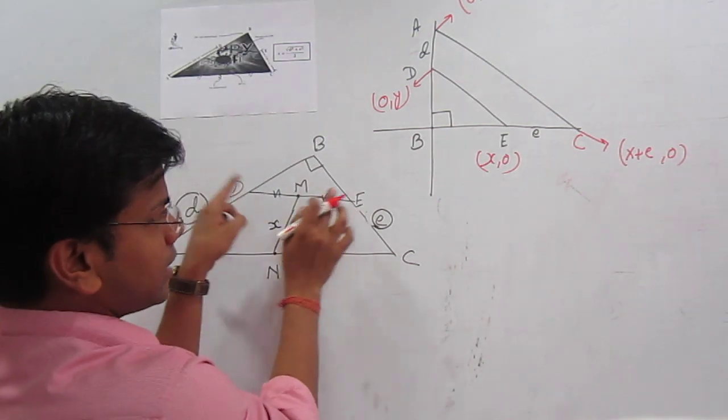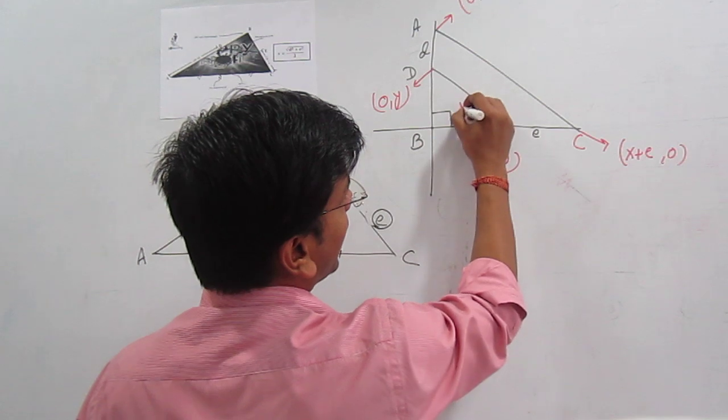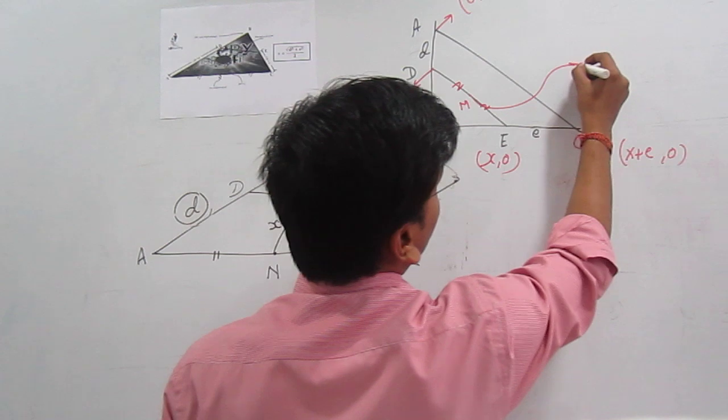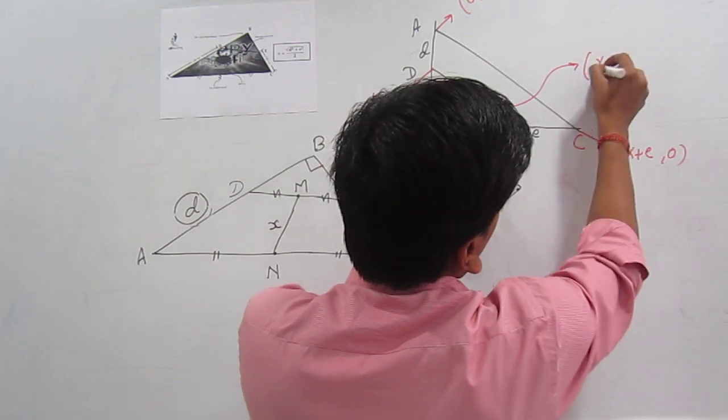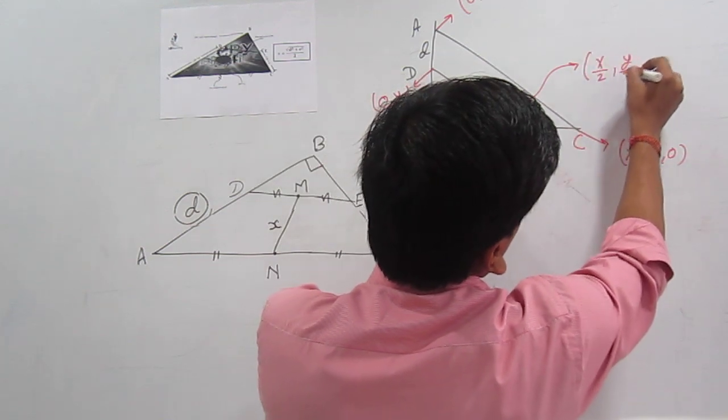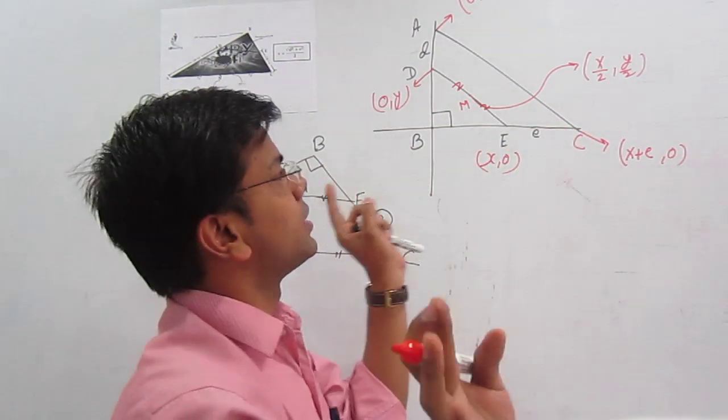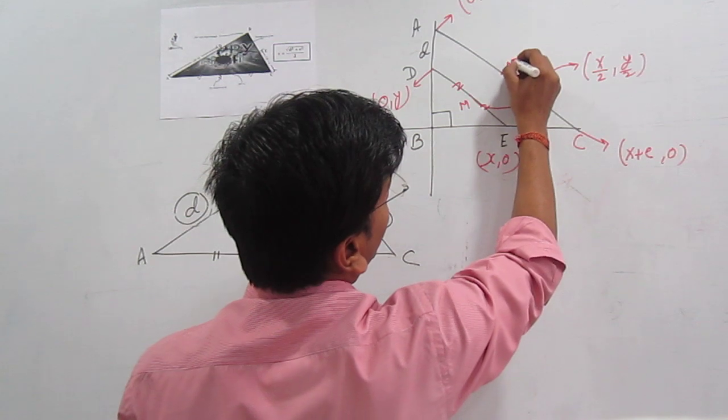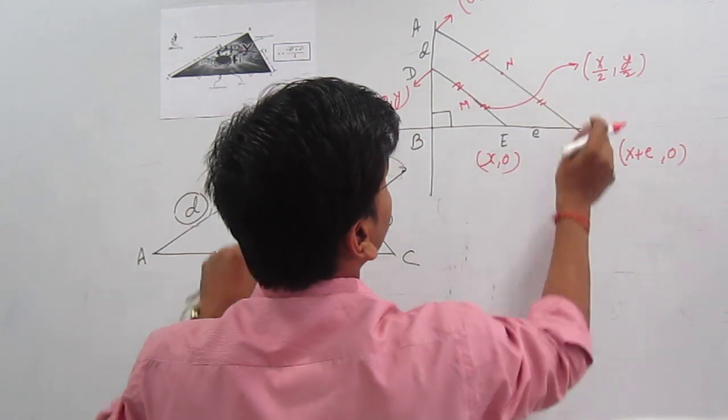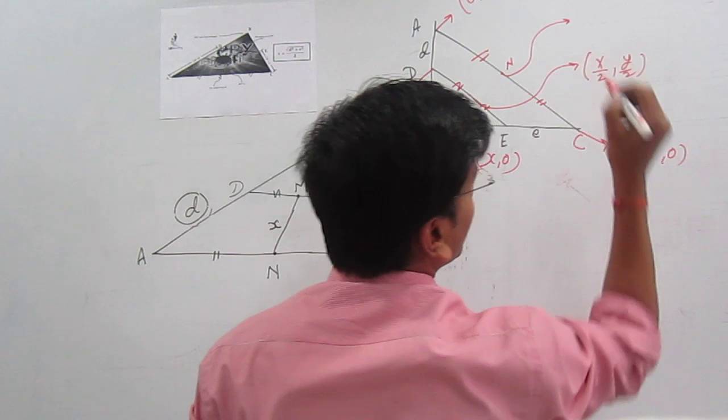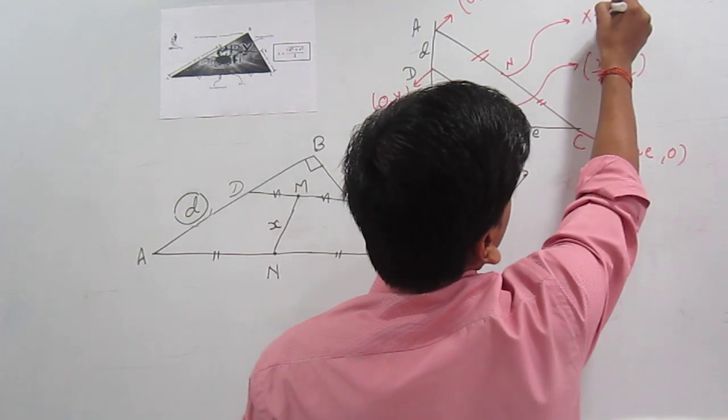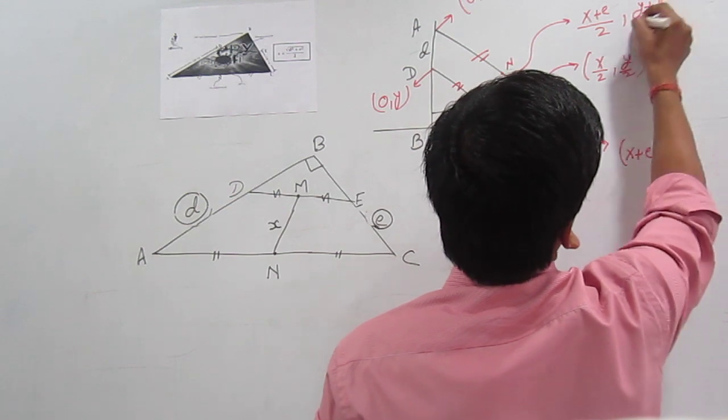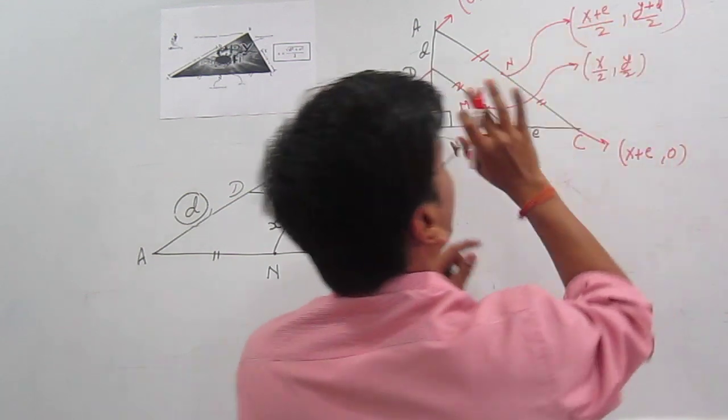Where is the M? M is the midpoint. This is my M. And the midpoint of D, E. We have a coordinate. And the midpoint. So by the midpoint what we can say? It is X by 2 and Y by 2. Midpoint is average. Where is the N? N is the midpoint of AC. We have coordinates. So N is X plus E by 2 and Y plus D by 2. I think we have all the coordinates.